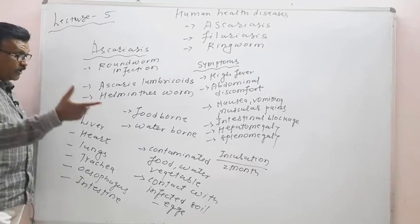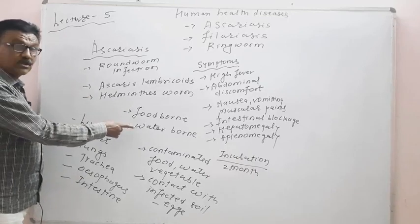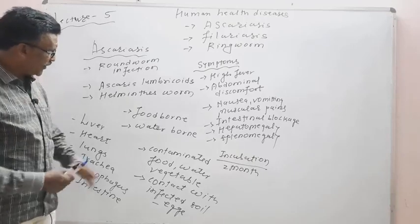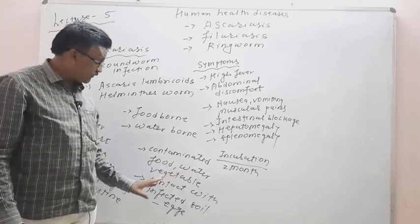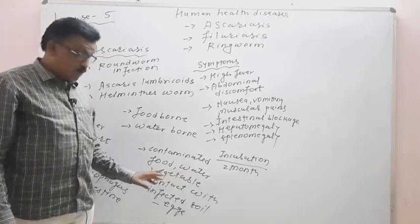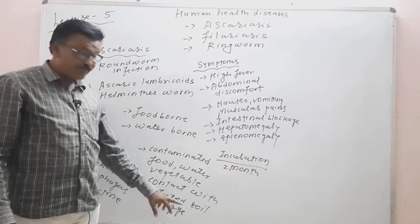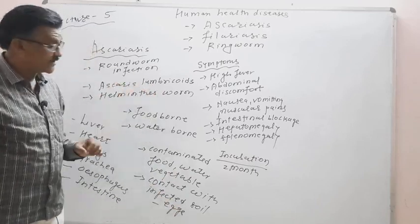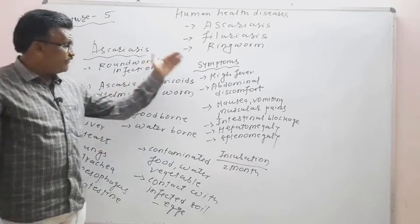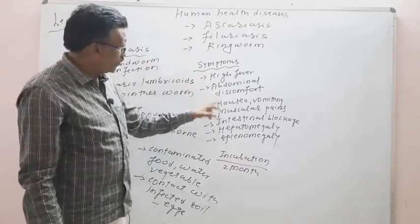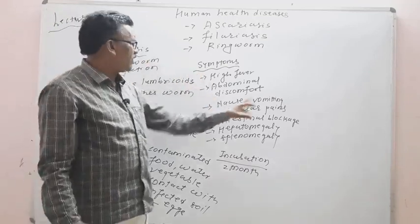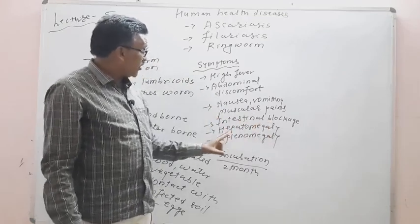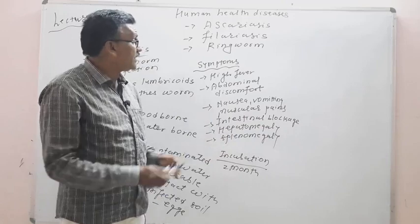Infection takes place through contaminated food, water, vegetables, or contact with infected soil. Symptoms include high fever, abdominal discomfort, nausea, vomiting, muscular pain, intestinal blockages, hepatomegaly, and splenomegaly.